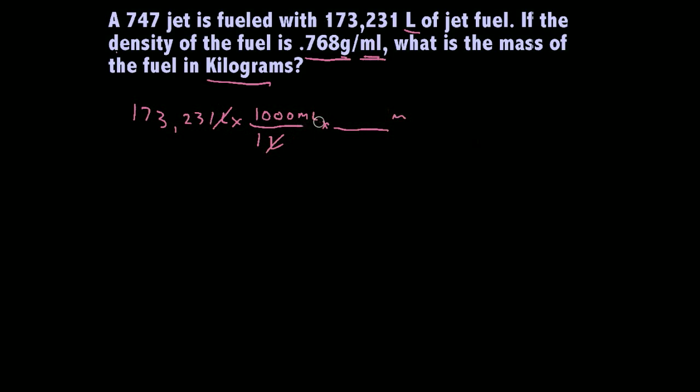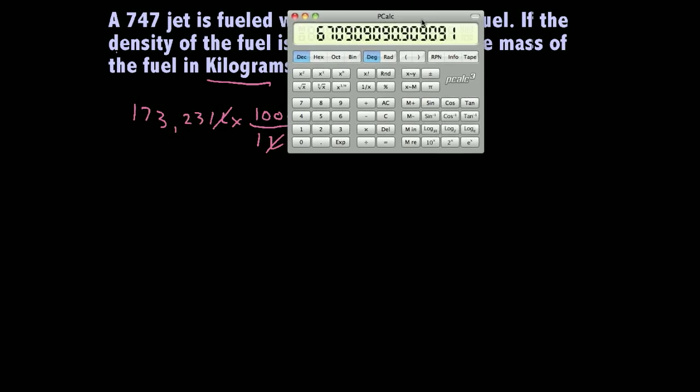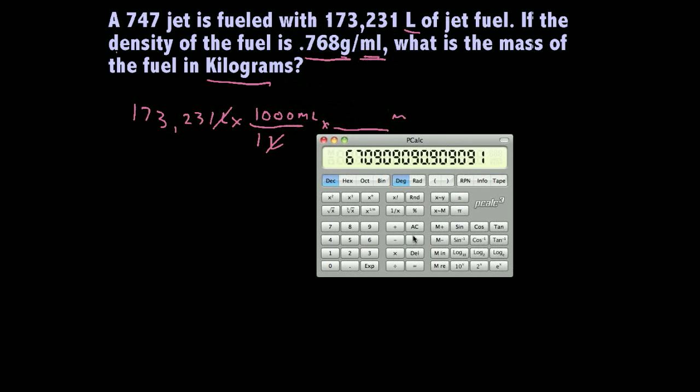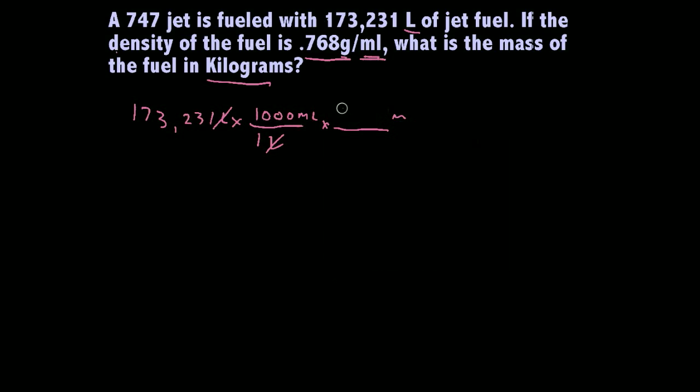So, grab our trusty calculator here, and we have 173,231 times 1,000. And it basically adds three zeros to it. So, I'm going to put this in scientific notation, just for simplistic sake.